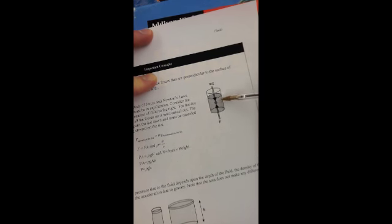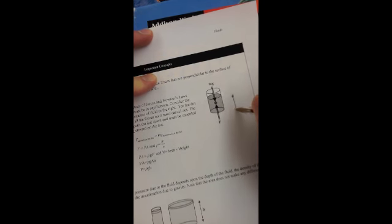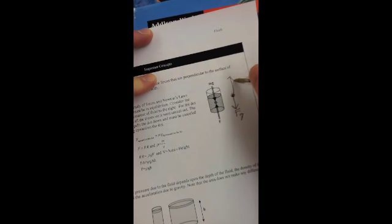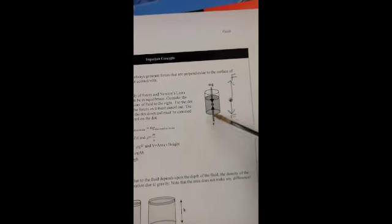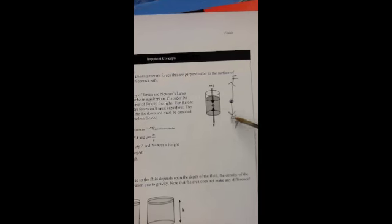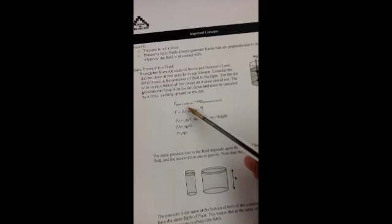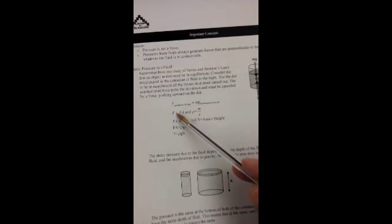That means there are two forces on that object. One is the force of gravity pushing down. They could also draw their force diagram this way. Here's my force of gravity, and here's the force of the water. Now Newton's second law tells us that since this object is not accelerating, these forces are balanced. So they just do a little math here.